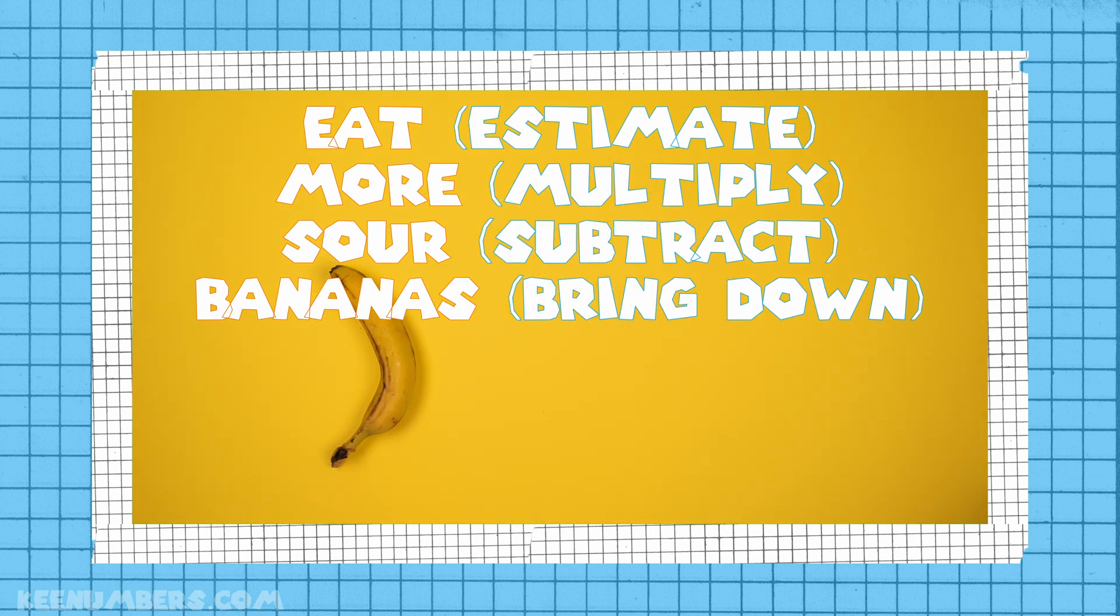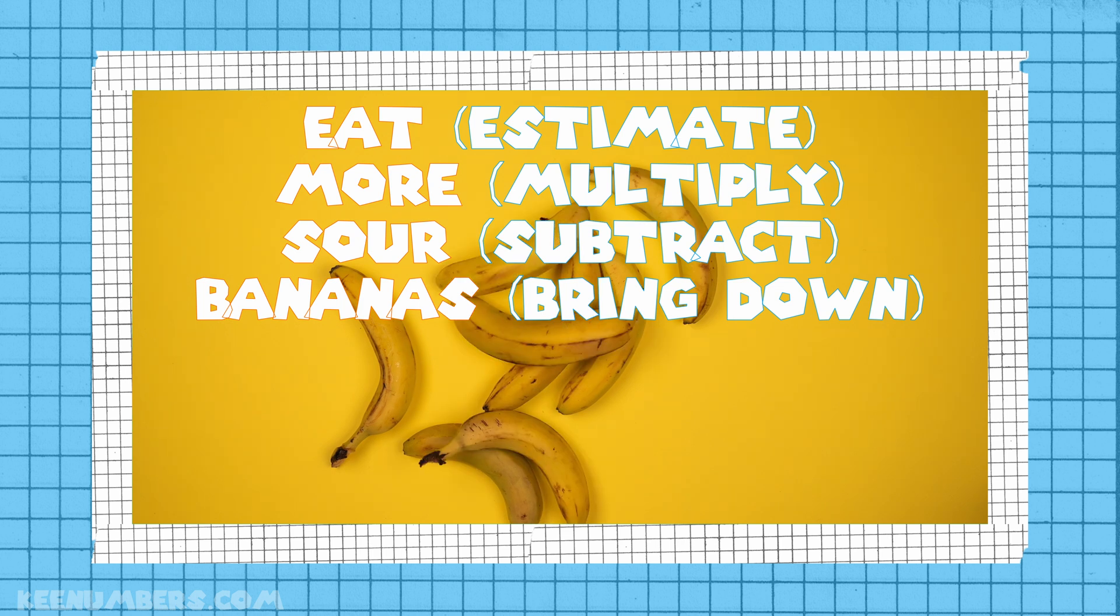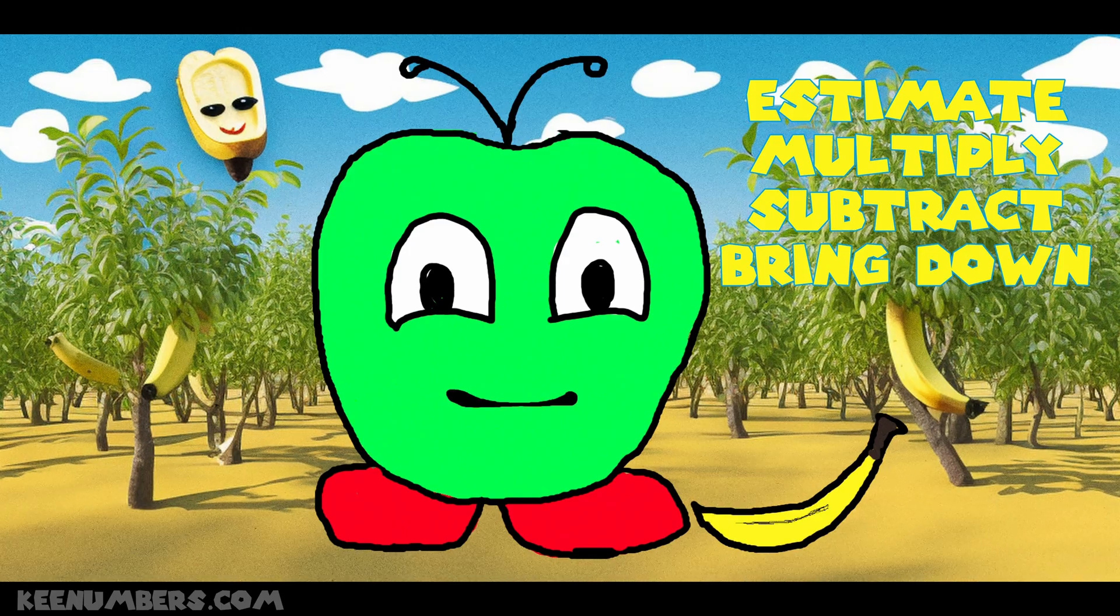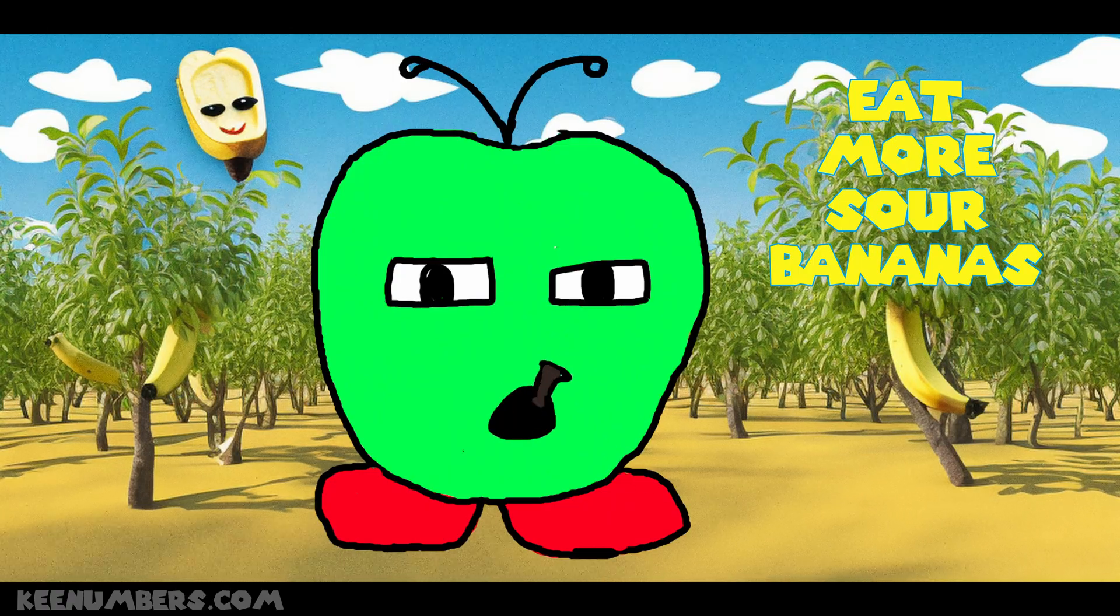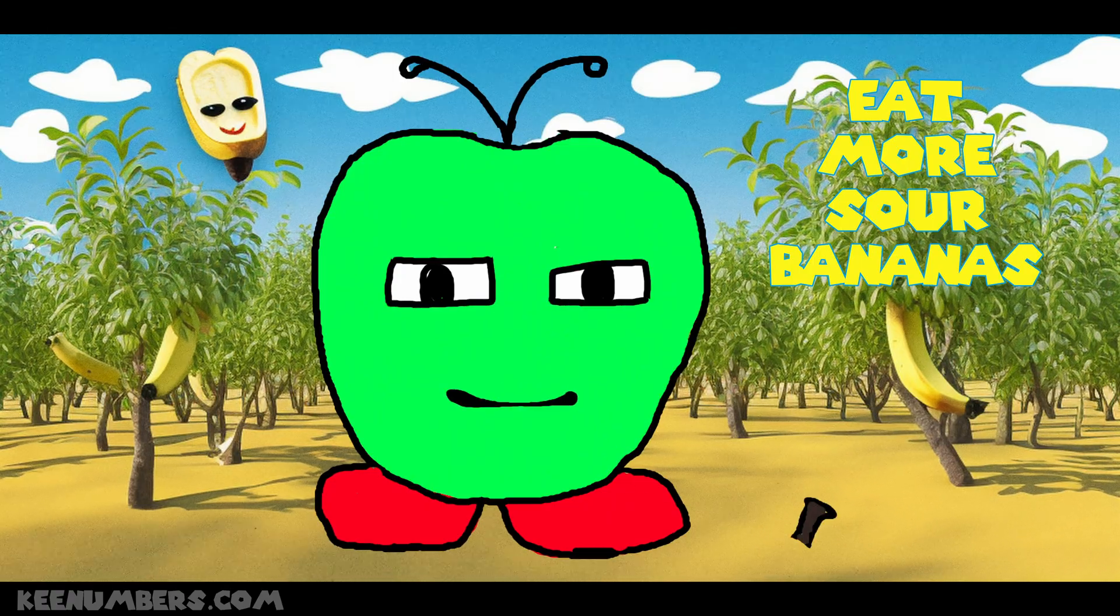E is for estimate. M is for multiply. S is for subtract. And B is for bring down. Eat more sour bananas.